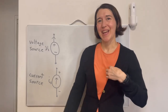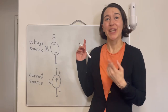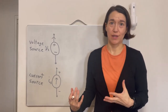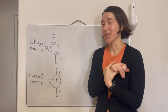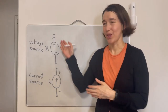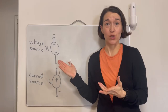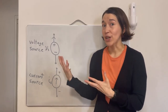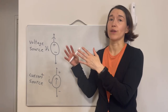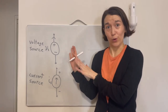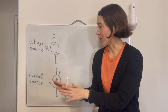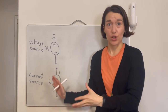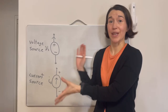This is Professor Kim, and here we're going to talk about ideal sources. We have this symbol — this is a voltage source. These are independent sources, so they have a defined voltage value in terms of the voltage source. We also have a current source, which has a constant current defined by something else.